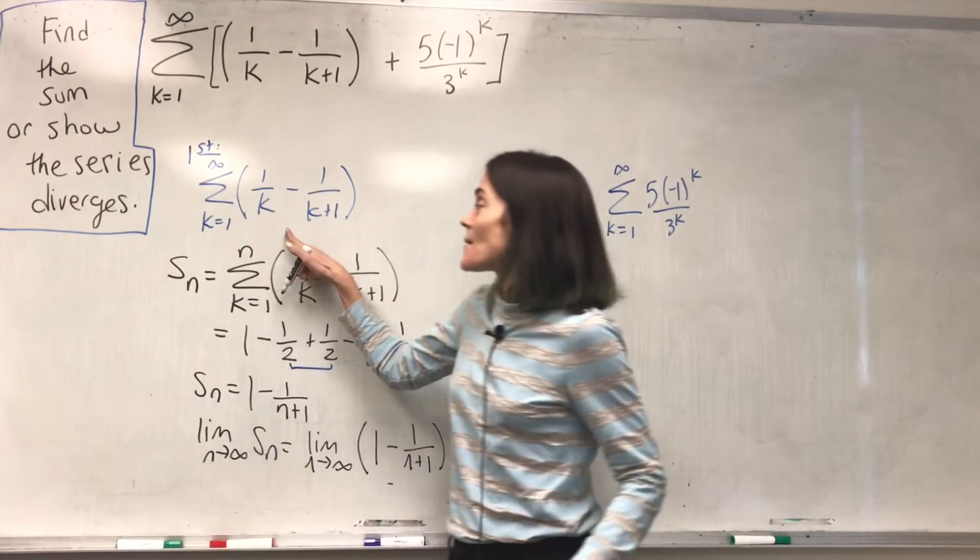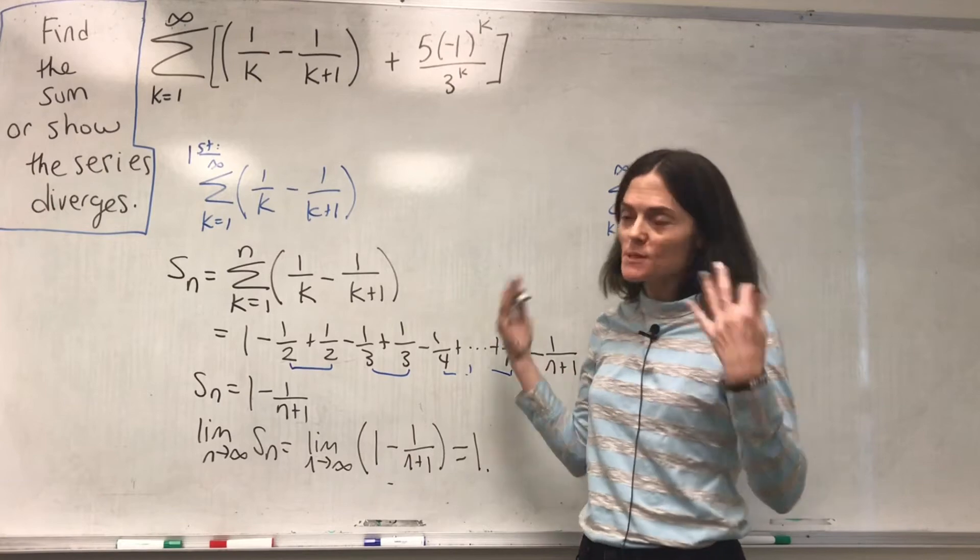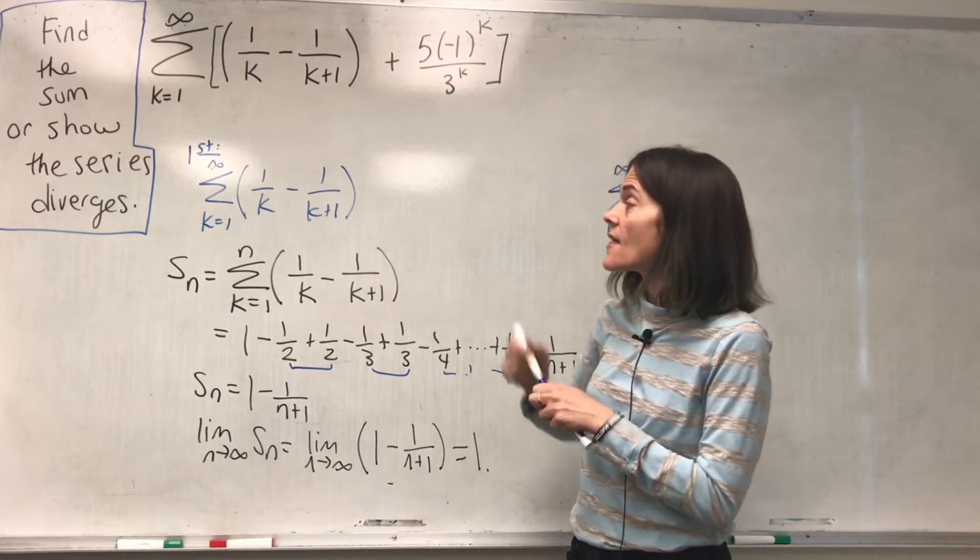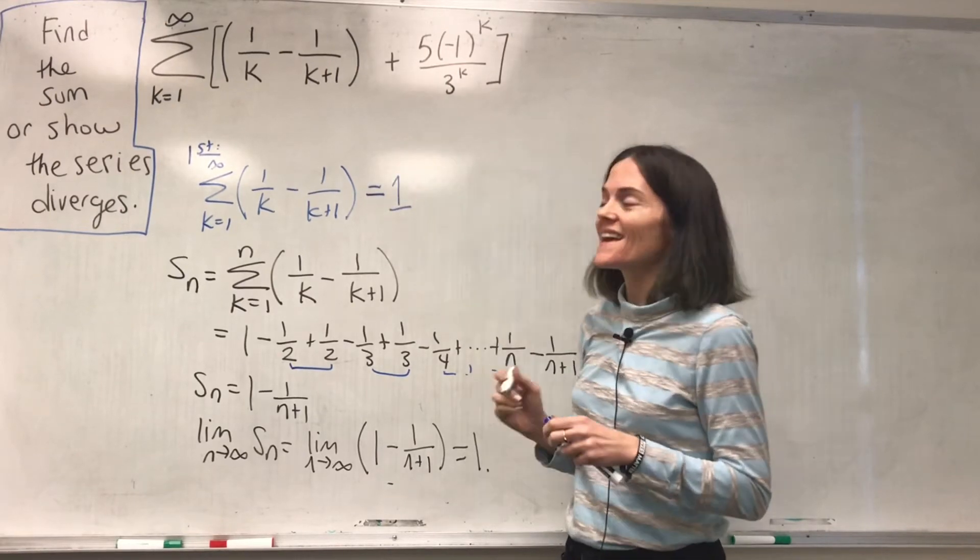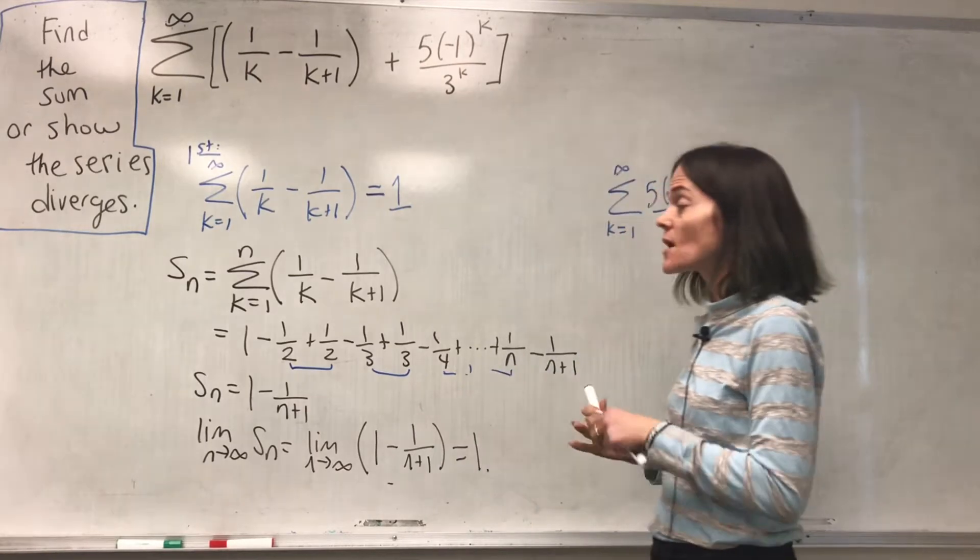By definition, the sum of this series is the limit as n goes to infinity of these partial sums, provided the limit exists. So, we have calculated this sum is 1. This converges, the sum is 1, this limit of the partial sums. Wonderful.